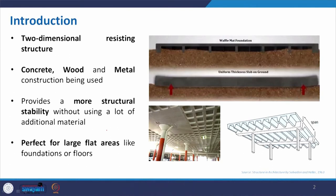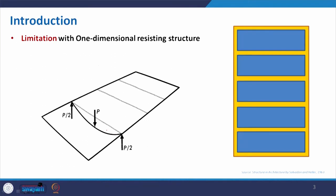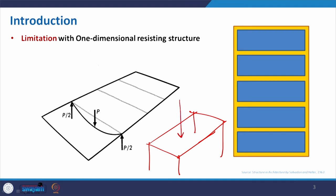To understand what exactly it is, we need to know about the one-dimensional structure. Whenever you have a frame structure or flat slab structure, you have a number of columns and then the slab. The load applied on the slab is distributed and transmitted to the column, and the column transfers load to the lower floor and then to the foundation.